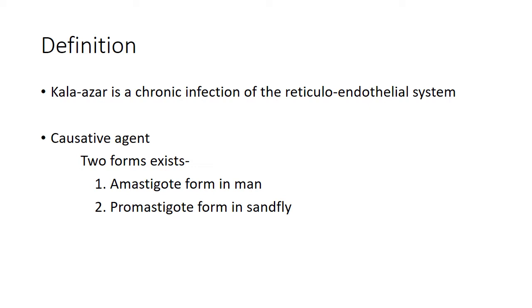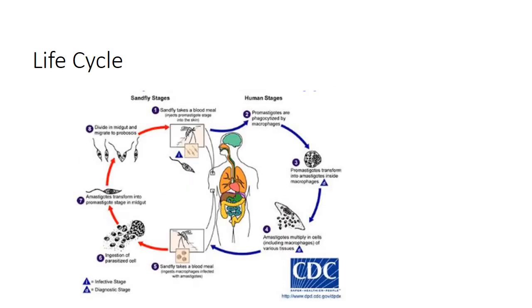The vector for Kala-azar is the sandfly, whereas the reservoir is man. The amastigote form is present in the reticuloendothelial system of man. The sandfly then gets infected by sucking the blood of man. It is then transformed to the promastigote form in the sandfly and multiplies in the midgut.